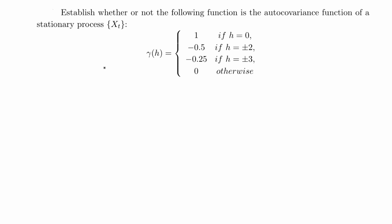In this video I'm going to go over this time series problem. It says establish whether or not the following function is the autocovariance function of a stationary process xt. You're given a function gamma of h and its domain, and you're basically tasked with figuring out whether this function can be an autocovariance function of a stationary time series. I'm going to use the Fourier transform to determine whether or not this function can be an autocovariance function.